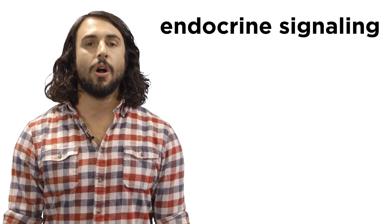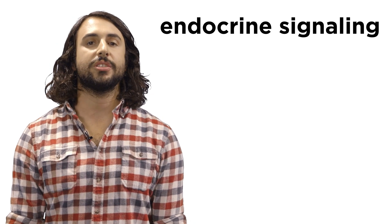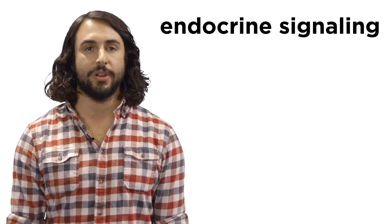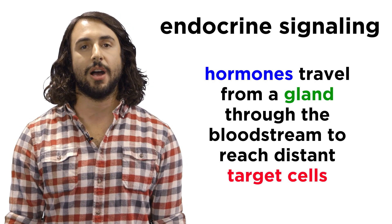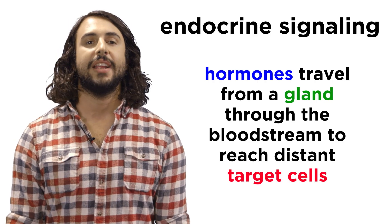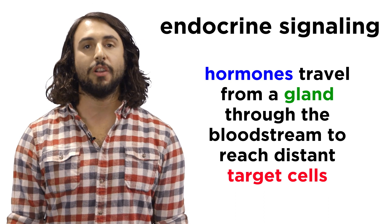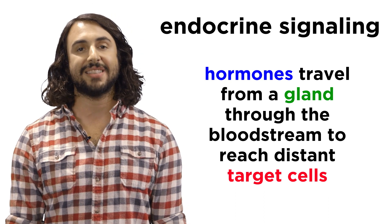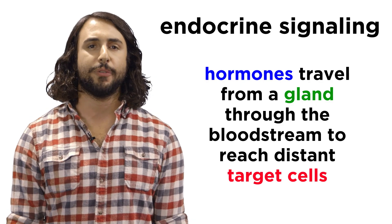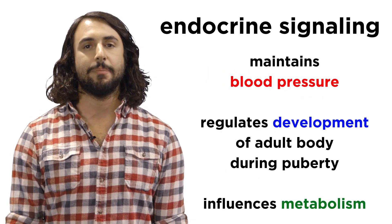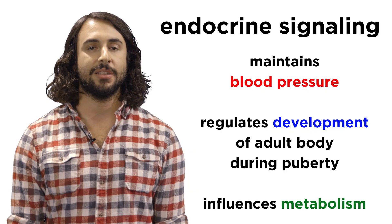And lastly, the long-distance signaling that happens in our bodies occurs via endocrine signaling. This is when a particular type of compound called a hormone is released by a gland and is then carried through the bloodstream to its destination. This system has a range of functions like maintaining blood pressure, the regulation of development, and more.